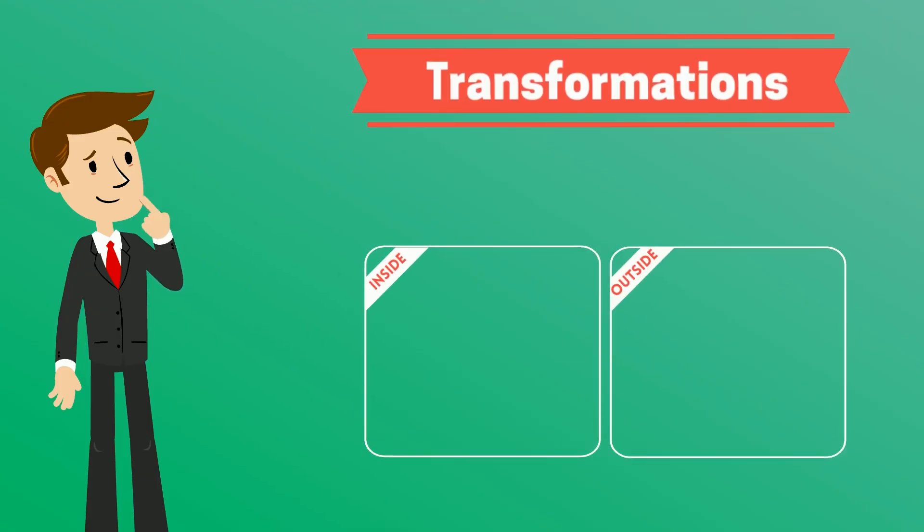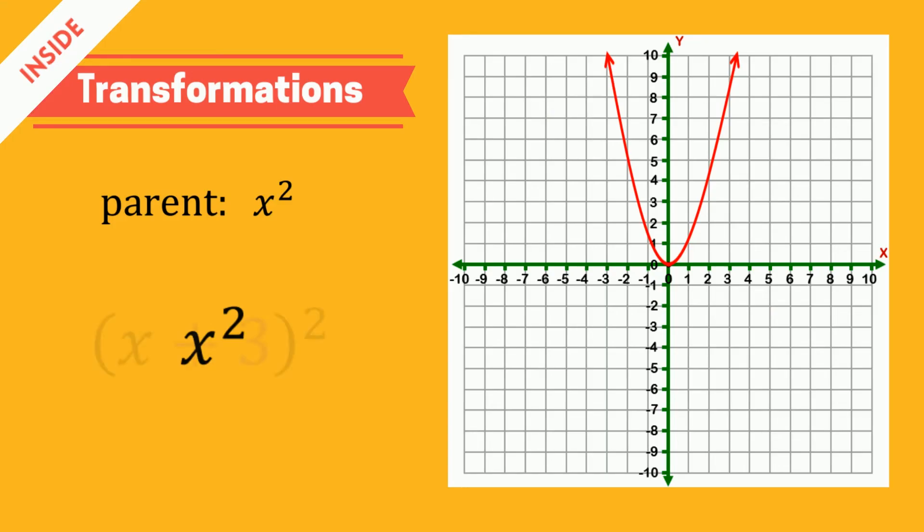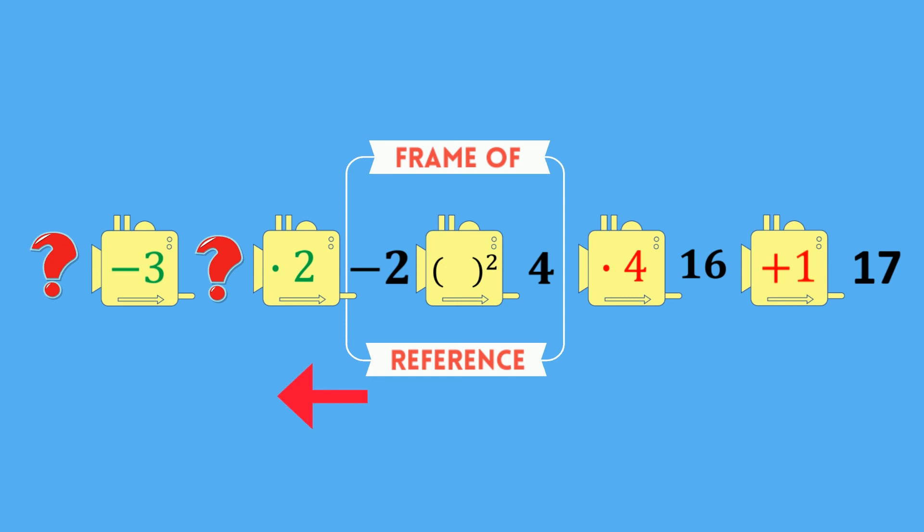So, in summary, when we talk about outside and inside transformations, these are really in reference to some given function. The inside transformations seem to be backwards, but this is only because they are applied before our given reference point. We are the ones who are working backwards through them to find the proper inputs.